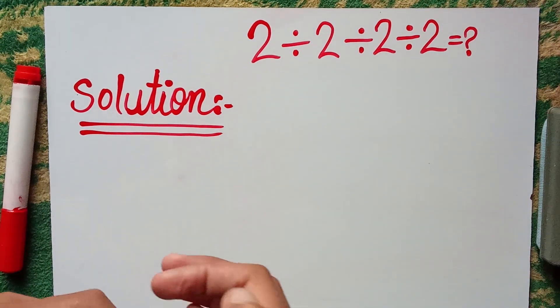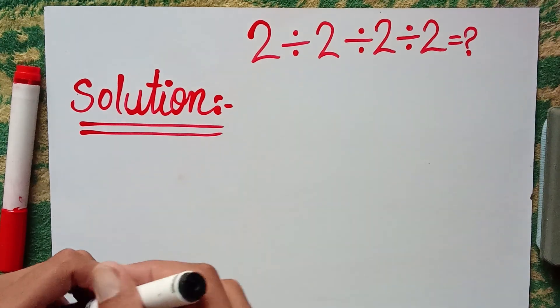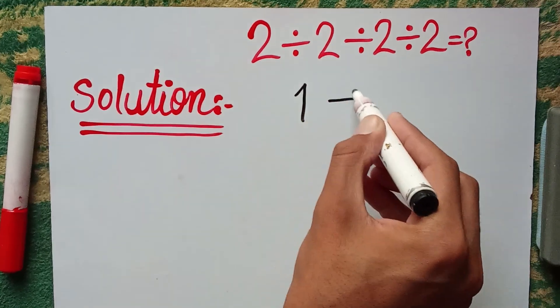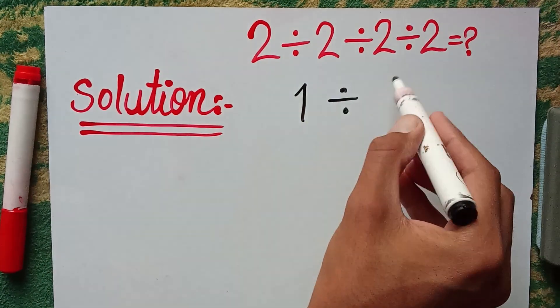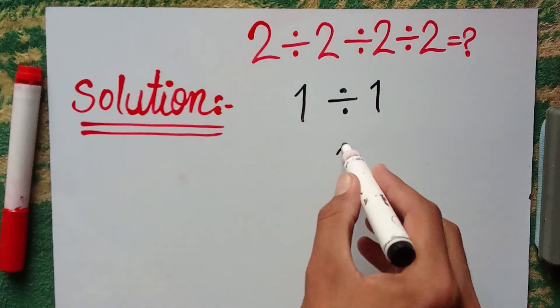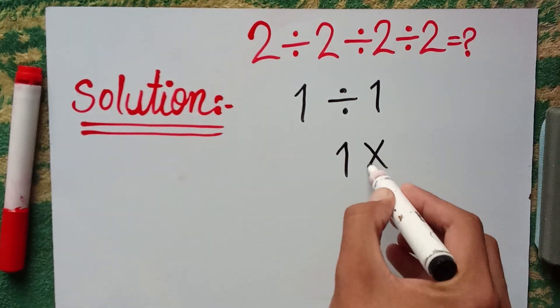Because most of the people can solve this question by this wrong method. 2 divided by 2 equals 1, divided by 2, divided by 2 again equals 1. 1 divided by 1 equals 1. But this answer is wrong.